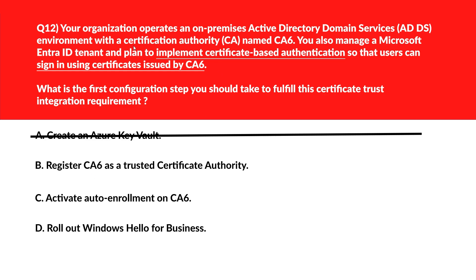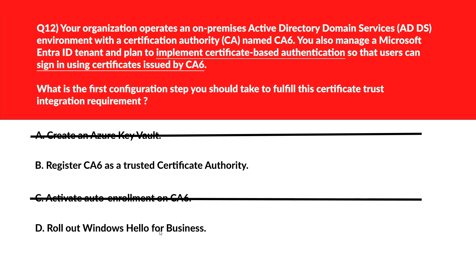CSX is a certification authority. Microsoft Entra ID must recognize CSX as a trusted certificate authority before it can validate certificates issued by it for authentication. Option C says activate auto-enrollment on the certification authority — auto-enrollment helps distribute certificates but doesn't register the CA with Microsoft Entra ID. Wrong choice.